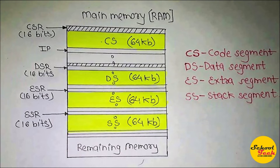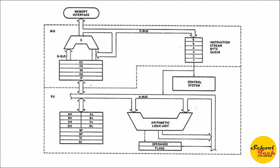Regarding the registers of the 8086, the microprocessor supports different types of 16-bit registers visible in the architectural diagram. These registers are classified into three types: General Purpose Registers (GPR), Special Purpose Registers (SPR), and Conditional GPR or SPR. There are four 16-bit general purpose registers: AX, BX, CX, and DX, used to store data like input values, final results, intermediate results, addresses, or count values.